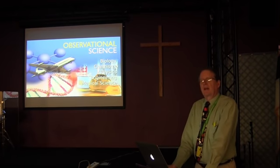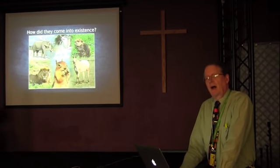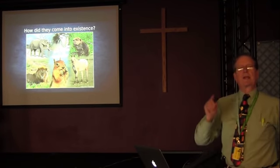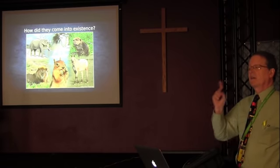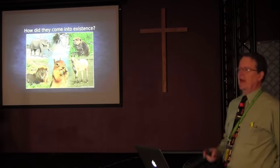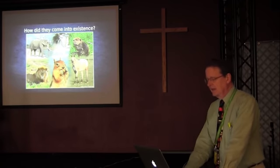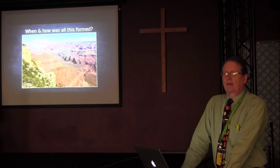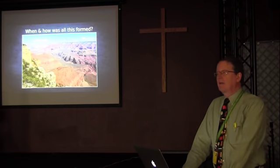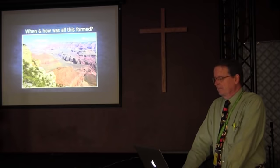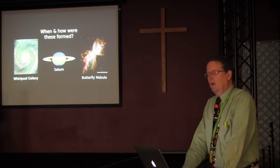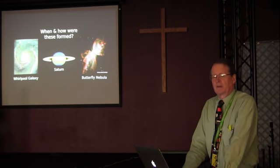But that kind of science won't answer the question: how did those creatures come into existence? The question is not how do we get a dog from another dog, but how did the first dog come into existence? How did the first elephant, the first cat come into existence? How did the Grand Canyon form? How did the rock layers all over the earth come into existence, and when? How did the objects we see in the heavens come into existence, and when? Those are historical questions.